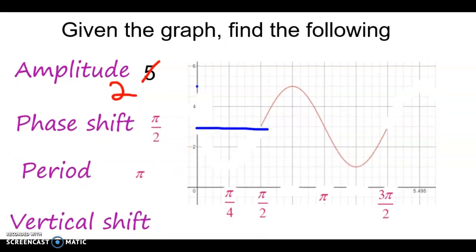Vertical shift. How far did it move from the x-axis? Well, it went up here to 3. So the vertical shift is 3.